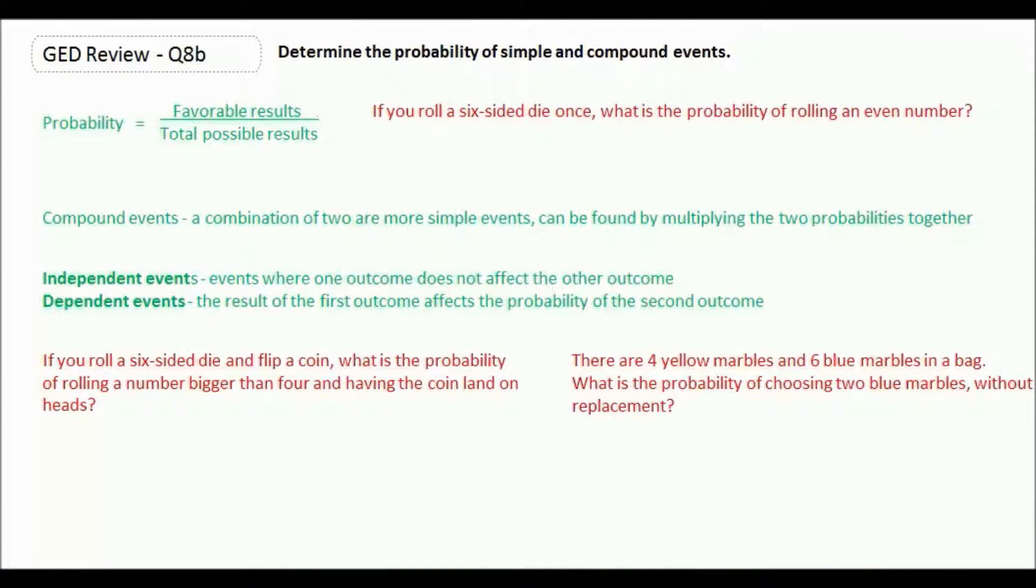Let's deal with a little bit of probability now. Probability is the number of favorable results over the total possible results. Probability is always going to range between 0 and 1. 0 means it's definitely not going to happen. A probability of 1 means it's definitely going to happen. But most of the time our probabilities are going to fall somewhere in between the two. You can write probability as a fraction, a decimal, or as a percent, but you have to make sure it's between 0 and 1.